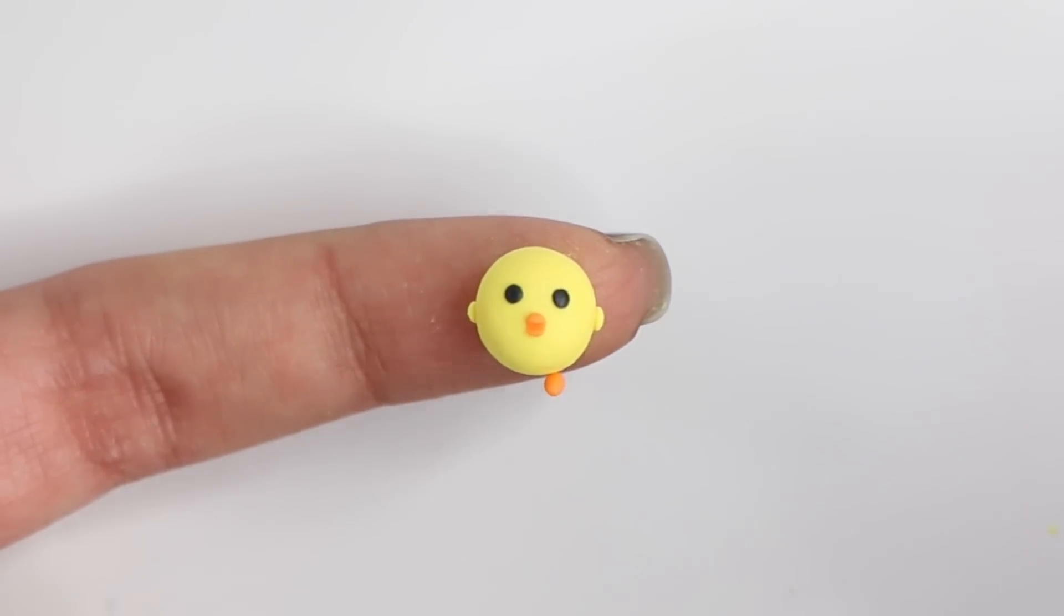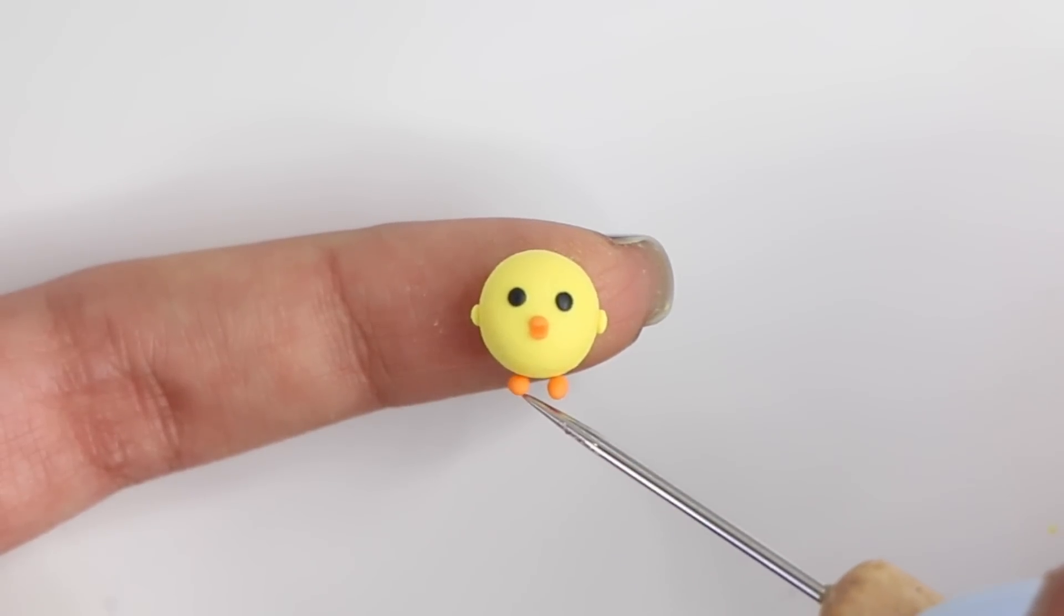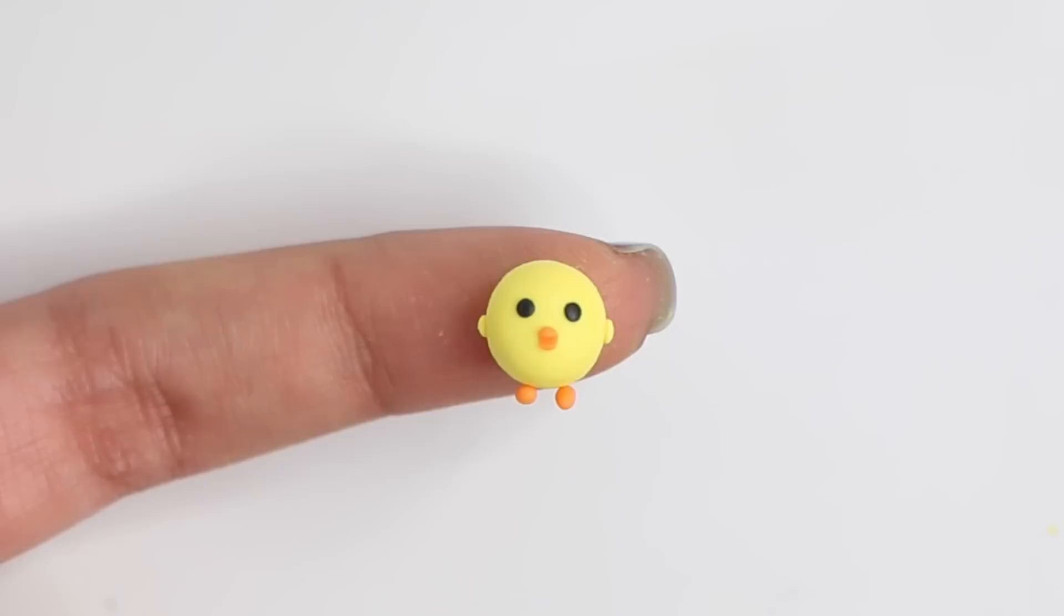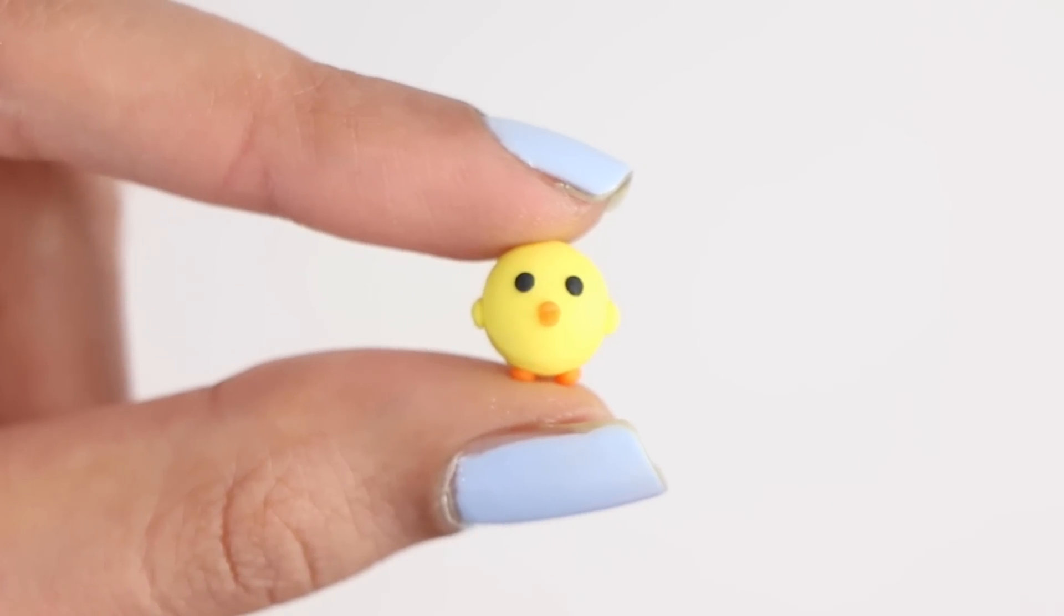And make sure that you flatten down the little feet against your table. You want to flatten it down so that they actually look like feet. And then you want to go ahead and bake it in the oven for about five minutes. Do not go over five minutes or else your little chick will burn.